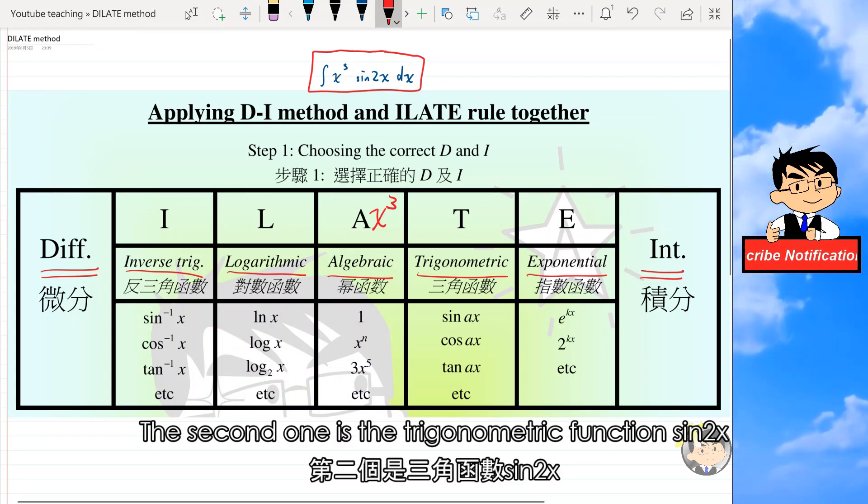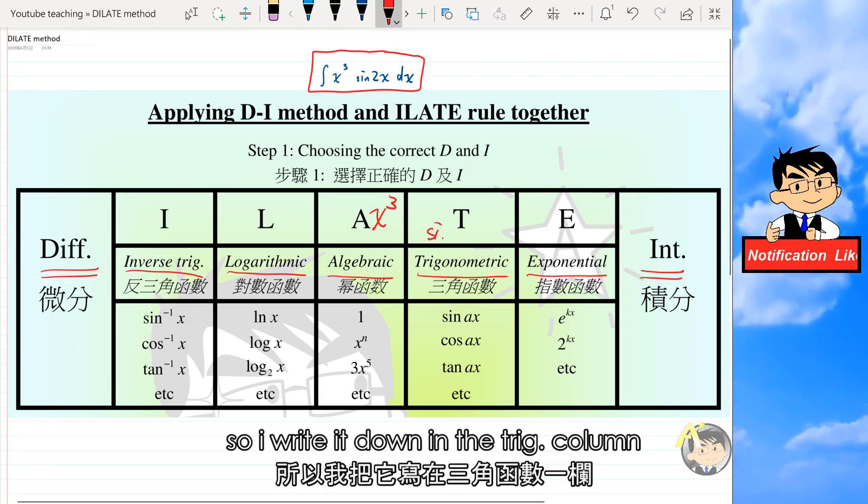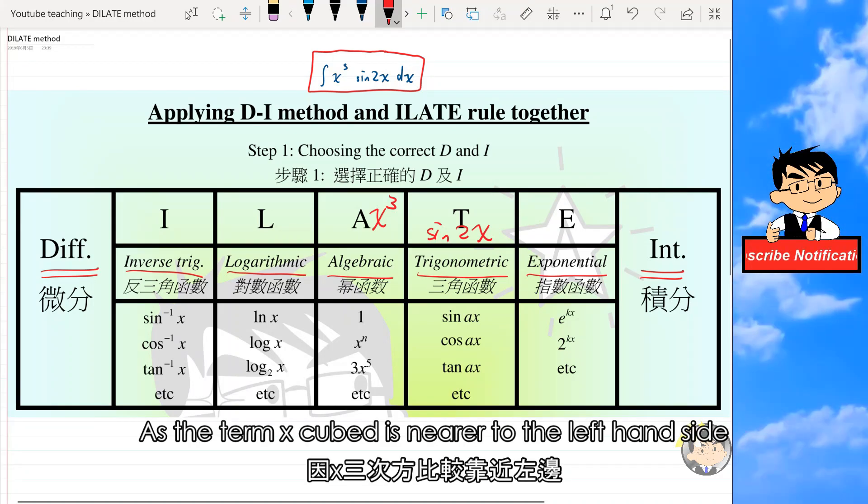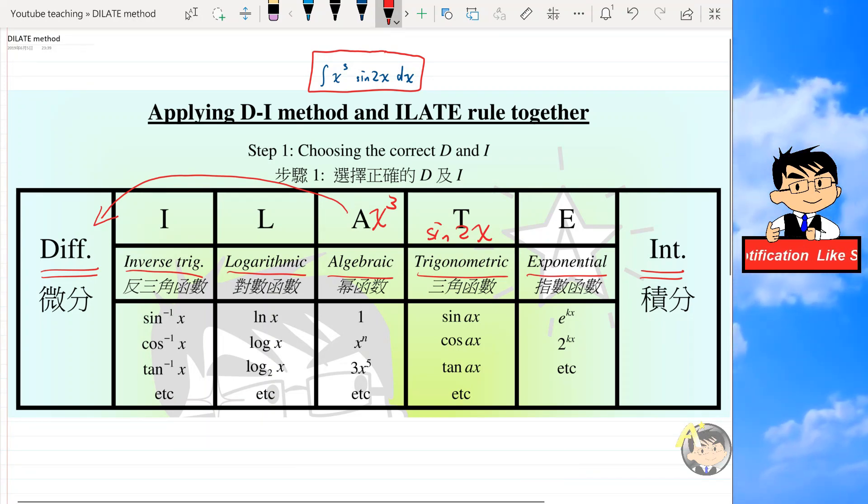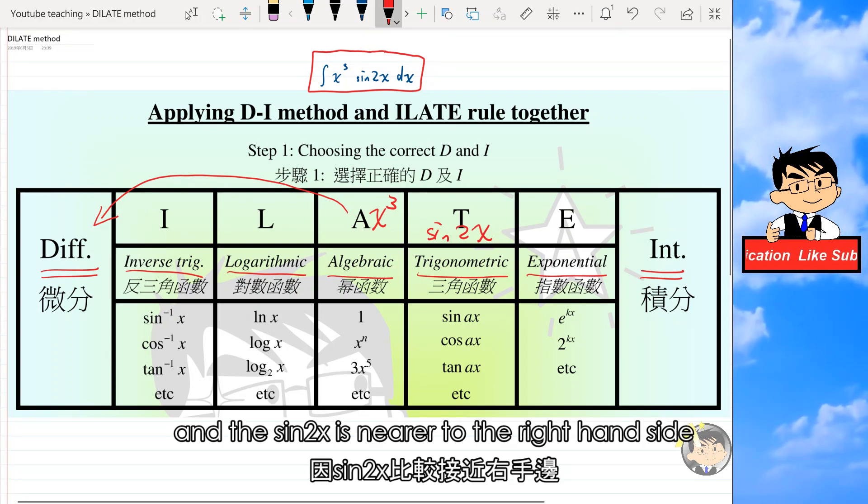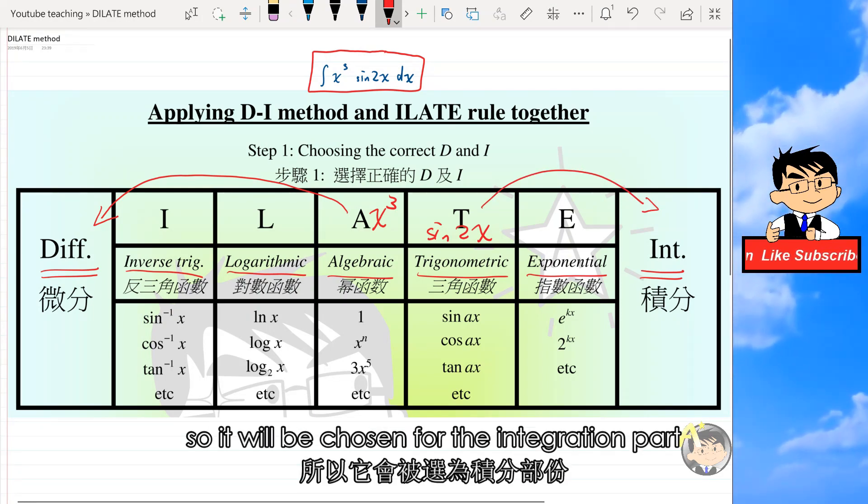The second one is the trigonometric function sine 2x, so I write it down in the trig column. As the term x cubed is nearer to the left-hand side, it will be chosen to be the differentiation part, and sine 2x is nearer to the right-hand side, so it will be chosen for the integration part.